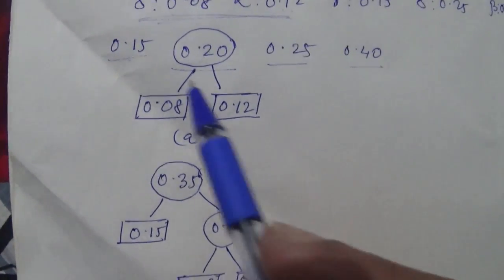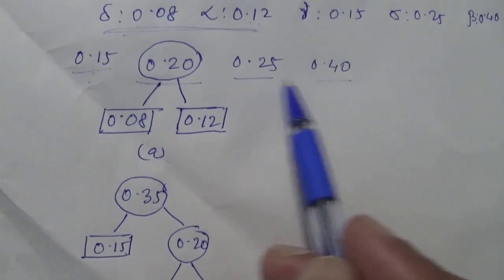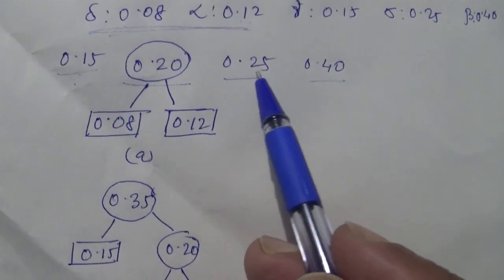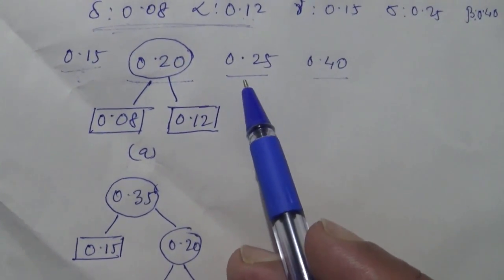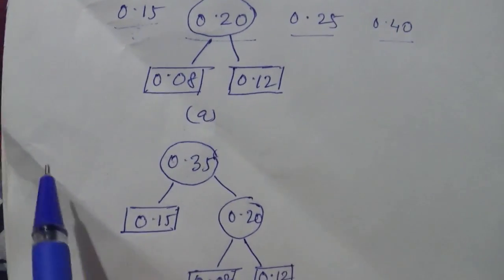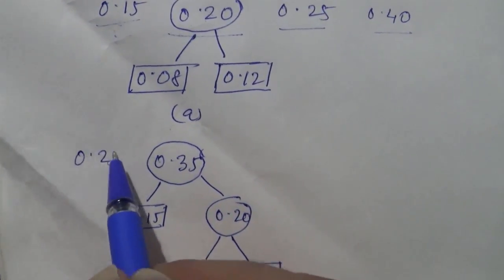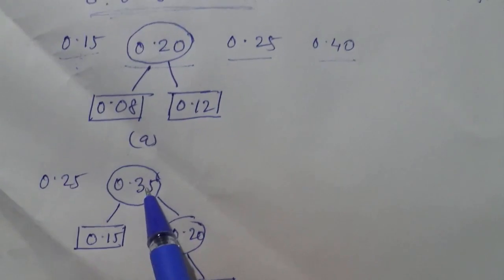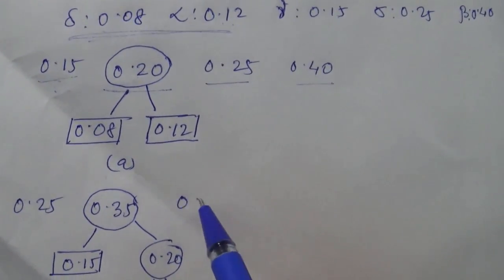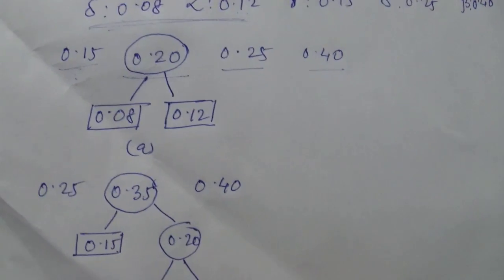These two have been used, so 0.25 and 0.40 are left. Since 0.25 is lesser than 0.35, it comes first, then 0.35 and then 0.40. So the order is 0.25, 0.35, 0.40. This is your Figure B.